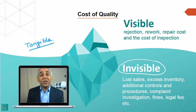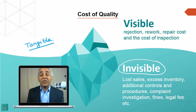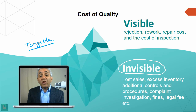The invisible cost is a sort of indirect loss due to lost sales and excess inventory. Inventory costs money — if you keep a lot of inventory you are tying down cash, which is a financial loss. Additional controls, additional procedures, complaint handling, complaint investigation, fines, and legal fees are all invisible costs that don't appear to be costs at first glance but are what you pay for poor quality in the long run.